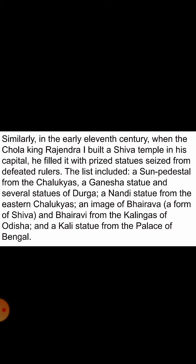Similarly, in the early 11th century, when the Chola king Rajendra I built a Shiva temple in his capital, he filled it with prized statues seized from defeated rulers. These included a sun pedestal from the Chalukyas, a Ganesha statue and several Durga statues, an Anandi statue from the eastern Chalukyas, an image of Bhairava and Bhairavi from the Kalingas of Orissa, and a Kali statue from the palaces of Bengal.